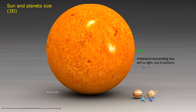The Sun. Jupiter and Saturn, Uranus and Neptune, Earth and Venus, Mars and Mercury.